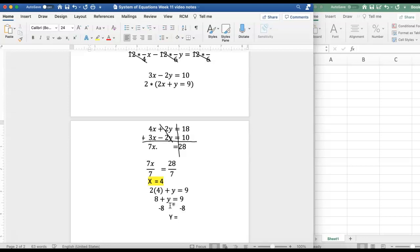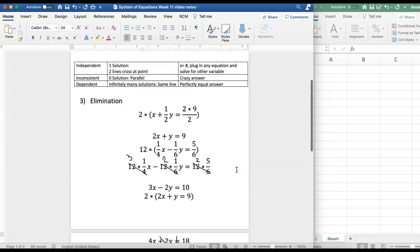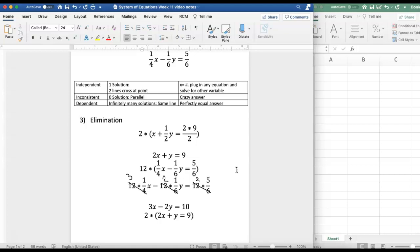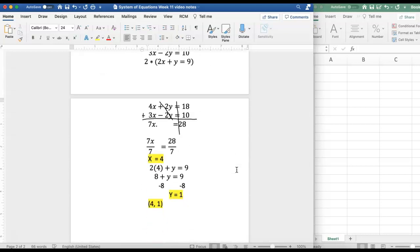y equals nine minus eight gives me one and that is my ordered pair right there. I will put them in the ordered pair, four because x comes first comma one and this is my answer. So this is an independent solution or system of equations because I ended up with one solution so these two lines crossed at one point and the answer was (4, 1). I hope this helps with working of fractions in your homework.